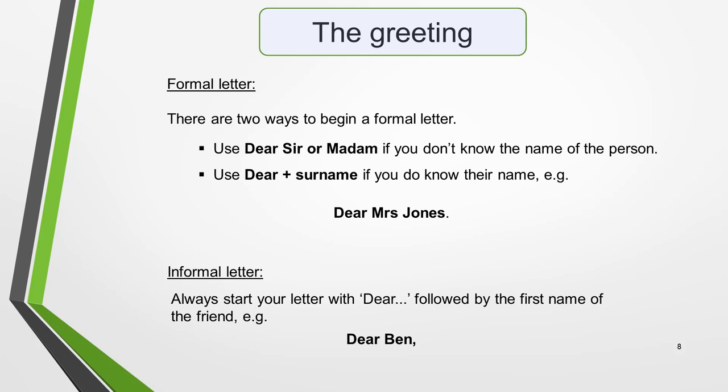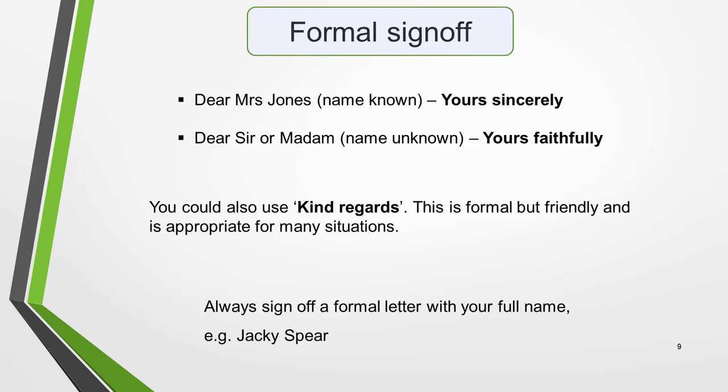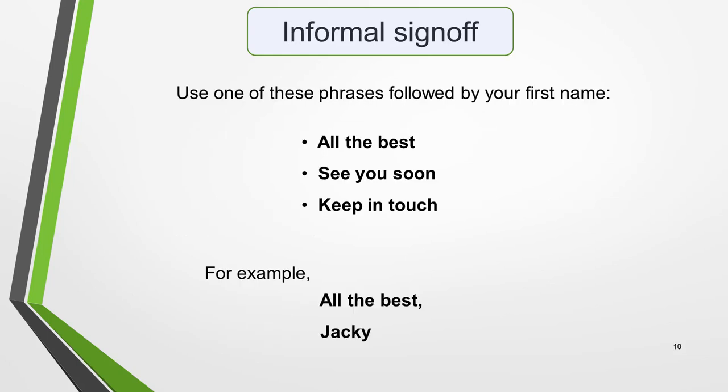The greeting you use will determine how you sign off the letter. For a formal letter, there are two main options for signing off. Use 'Yours sincerely' if you started the letter with 'Dear' and the surname — for example, 'Dear Mrs. Jones.' Or use 'Yours faithfully' if you started with 'Dear Sir or Madam.' You could also use 'Kind regards,' which is formal but friendly and appropriate for many situations — particularly useful if you struggle to spell 'sincerely' or 'faithfully.' Always sign off a formal letter with your full name, for example, 'Yours sincerely, Jackie Spear.' For an informal letter to a friend, use phrases like 'All the best,' 'See you soon,' or 'Keep in touch,' followed by your first name.